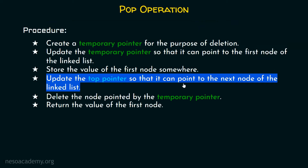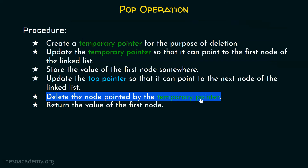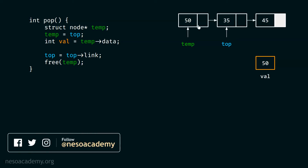After this, we will update the top pointer so that it can point to the next node of the linked list. For this, we put the line: top equals to top->link. This will update our top pointer, and eventually it will point to the second node of the linked list. Now temp pointer is pointing to the first node and top pointer is pointing to the second node — this will be our new top after deleting this node. We are in the perfect position to delete this node. We will call the free function and pass temp to it. We must pass the address of the node we want to delete. This will delete the node, and after this we must update our temp pointer to null.